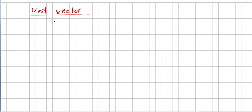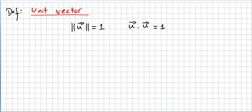Now we introduce a very important concept that we are going to use a lot: the concept of a unit vector. This is the definition: we say that a vector is a unit vector if the norm of the vector is 1. That is the same as saying that the inner product of u with u equals 1. This is a unit vector — the length of the vector is 1.